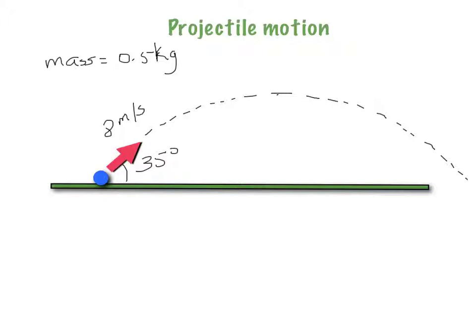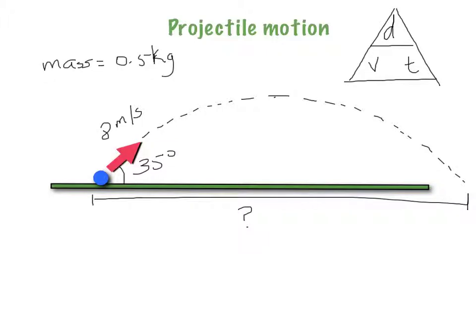So the question that we have to solve now is: how far will the ball go? That's what we need to find. If you are looking for the distance, basically, what we have to do is multiply velocity times time. So if we are looking for distance, we need to know the velocity and the time. But according to this problem, we can figure out the velocity — they gave us this velocity of 8 meters per second at our 35 degree angle — so we can figure out what is the horizontal component of this velocity. But how in the world are we going to figure out the time? We need the time as well.